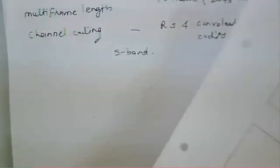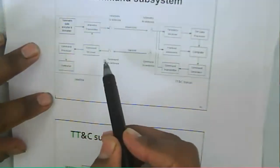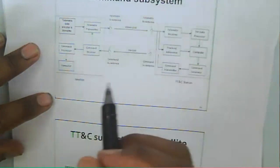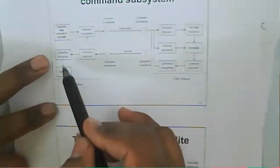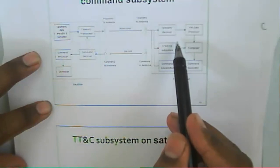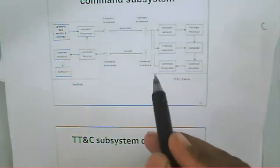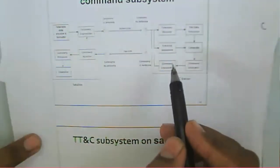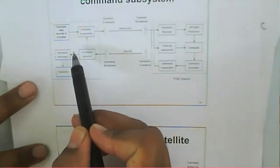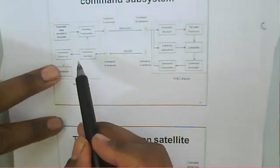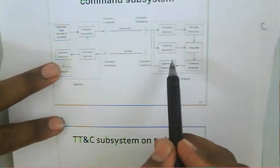In the TTC command system — Telemetry, Tracking, and Command — the satellite sends sensor information to the earth station. The earth station processes the information and identifies any corrections needed in the orbit or at a given position. That correction data is sent to the satellite, and the satellite confirms the data by sending the same information back to the earth station.